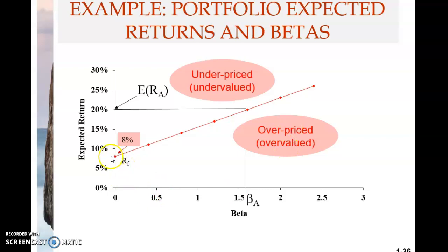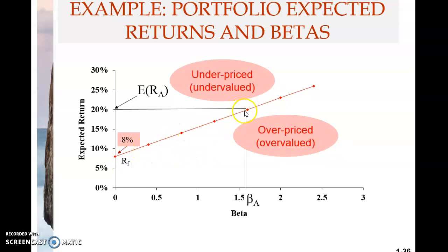Looking at this diagram, there are two points: one is the risk-free rate at zero beta with a rate of return of 8%, and the other point has a beta of 1.6 for stock A. We link these two with a straight line — a red line. At any point on this line, the reward-to-risk ratio is the same. So it is 20 minus 8, which is 12, divided by 1.6, giving a ratio — the gradient — of 7.5.